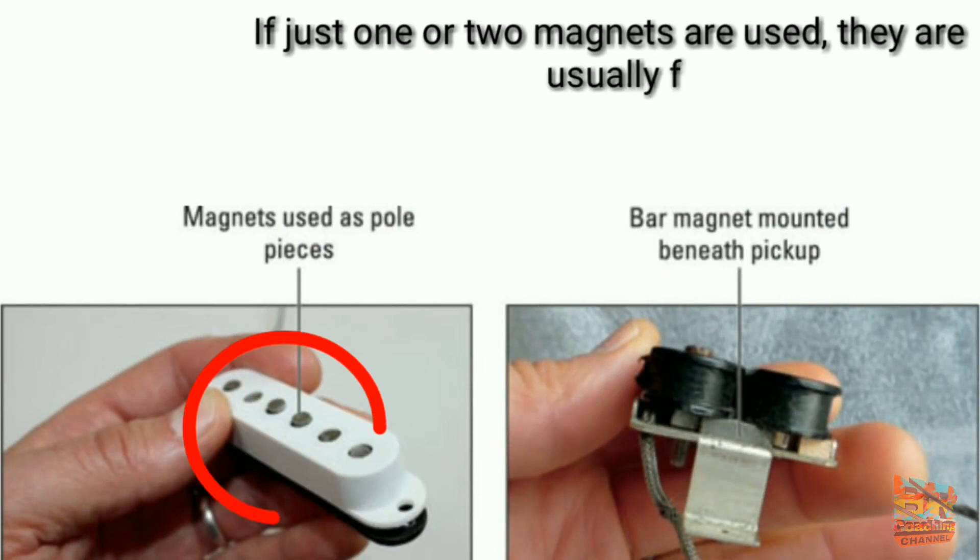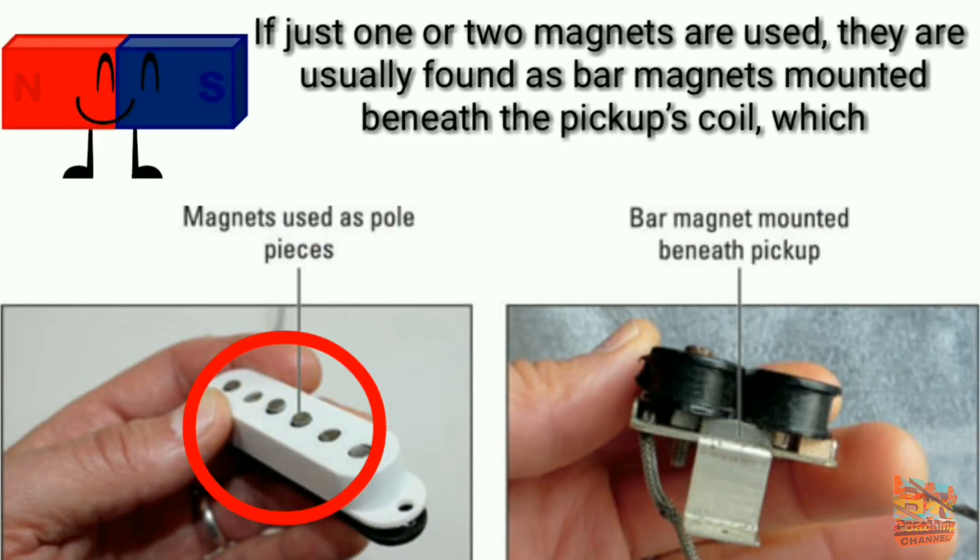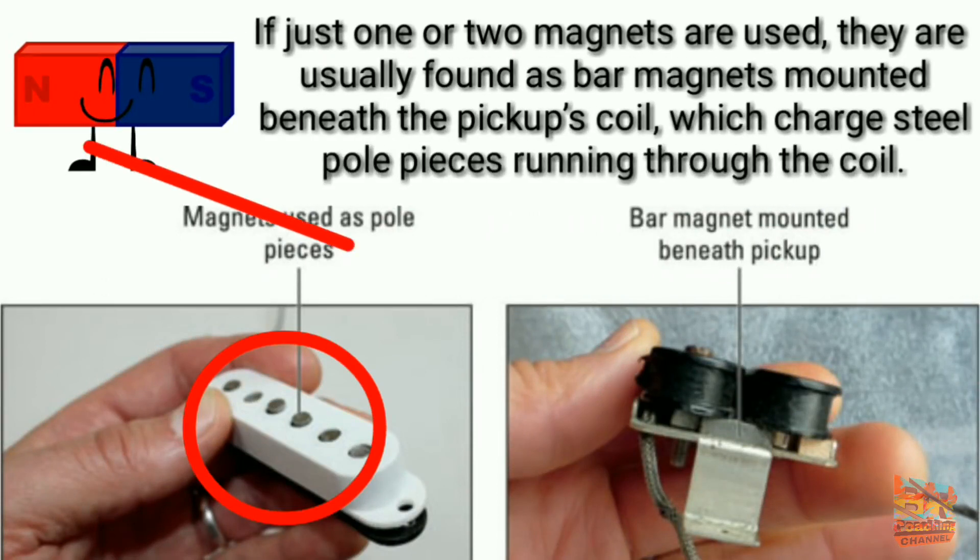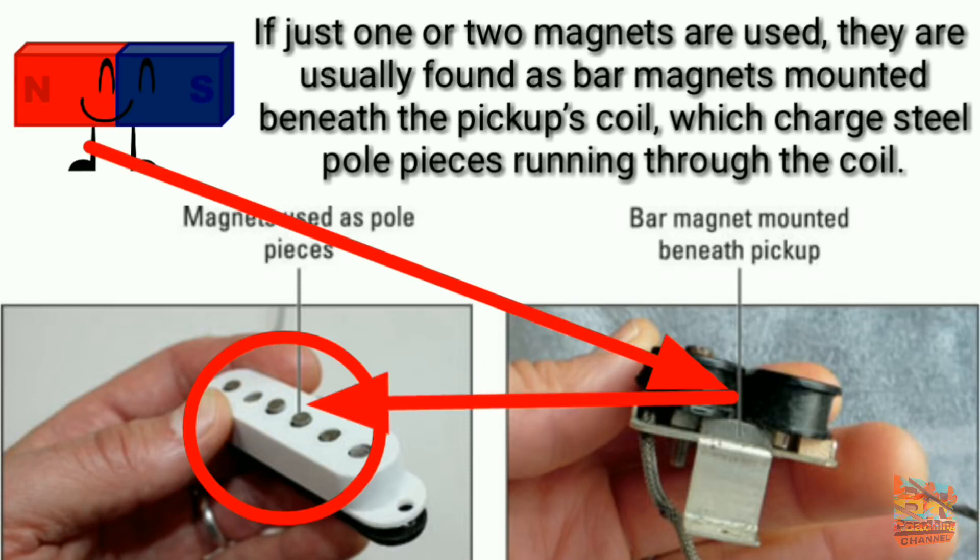If just one or two magnets are used, they are usually found as bar magnets mounted beneath the pickup coil, which charge steel pole pieces running through the coil. So magnets are used in guitar due to their magnetic field.